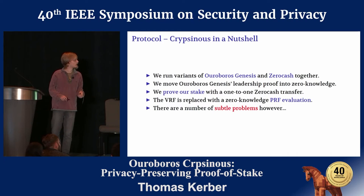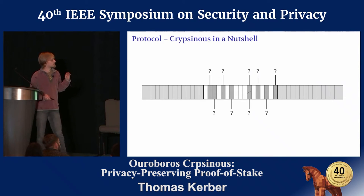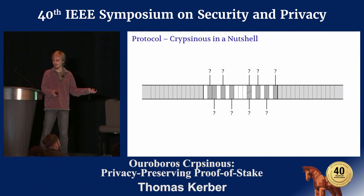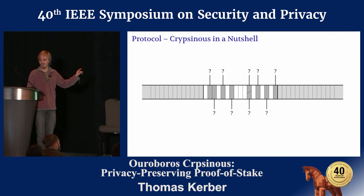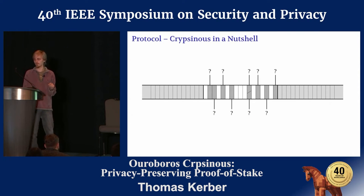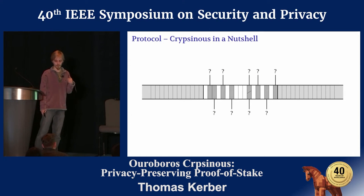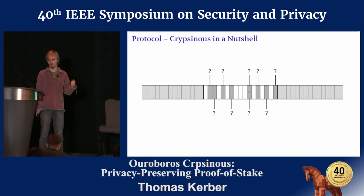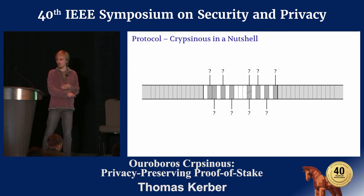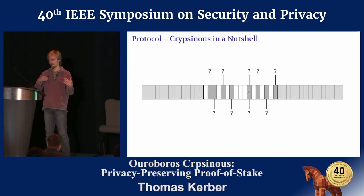A slide shows how this looks compared to Ouroboros Genesis — though this is a little disingenuous, because if you're observing the network you will still be able to see things. If you have network control, you will still be able to determine who is the leader of a specific slot. But otherwise you see the same structure — the same blocks being created in the same sequence — but you would not see who is associated with them.